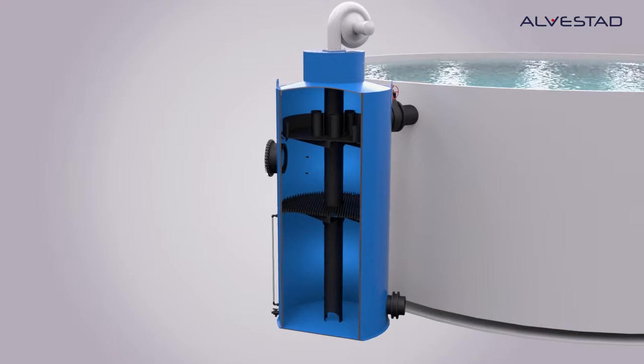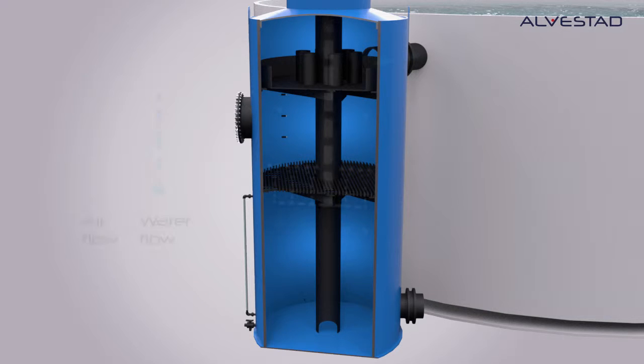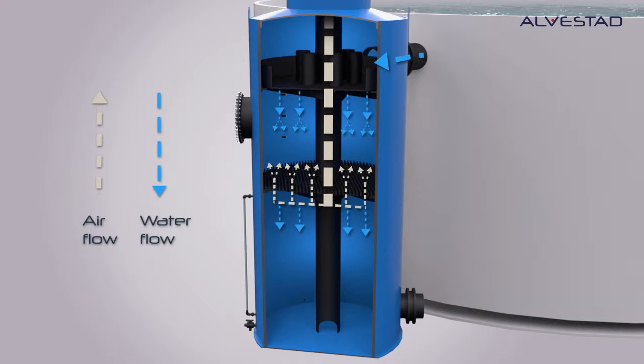The GasBuster aerator is built as a trickling column based on the counter-current aeration principle, which gives the highest efficiency for carbon dioxide removal. Water is evenly distributed at the top of the unit and, using gravity, trickles downwards through the aeration media.